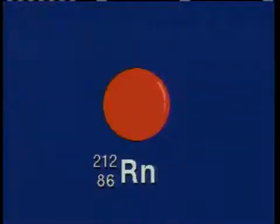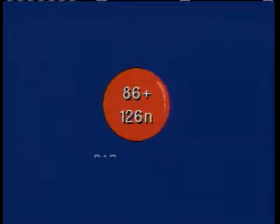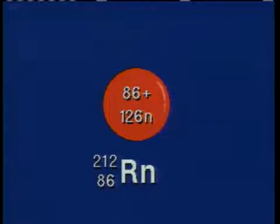Consider radon 212 with 86 protons and 126 neutrons. When this atom undergoes radioactive decay, an alpha particle is ejected, producing a major change in the nucleus. The nucleus that remains has become polonium 208. In other words, from radon, the emission of an alpha particle results in a transmutation to polonium.